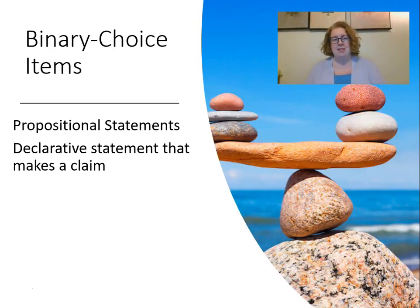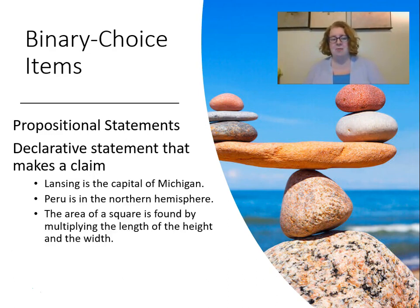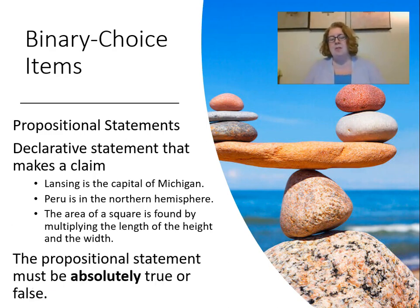Binary choice items are propositional statements — declarative statements that make a claim, like 'Lansing is the capital of Michigan' or 'Peru is in the northern hemisphere' or 'The area of a square is found by multiplying the length, height, and width.' The propositional statement must be absolutely true or false. Unlike multiple choice where we could use a best answer, for binary choice it really has to be absolutely true or false.